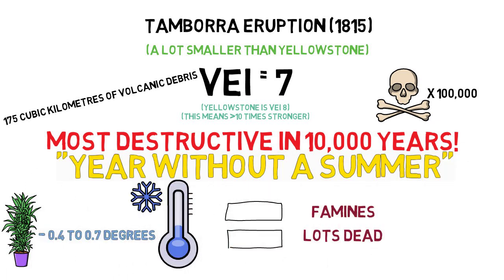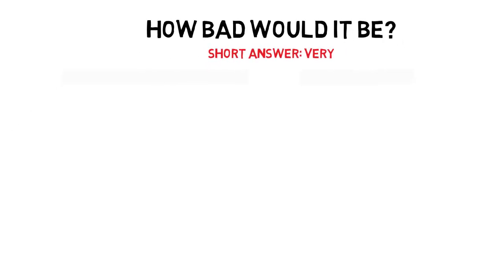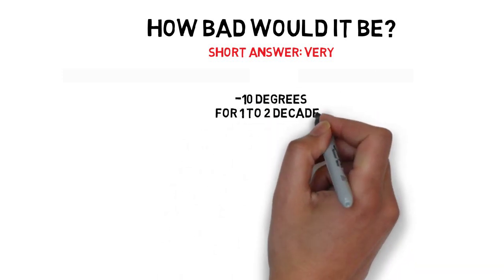So, imagine a super eruption of Yellowstone. How much longer would the climate be affected? Would it change the way we grow our crops for several years? Well, it would lead to a fall in temperatures by up to 10 degrees for as long as a decade or maybe even two.